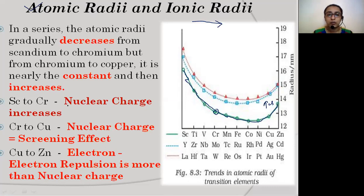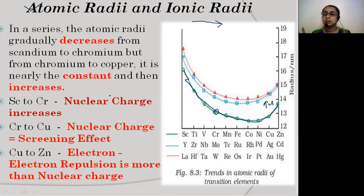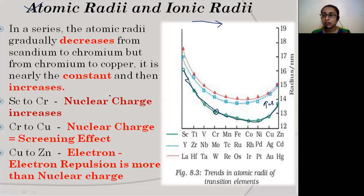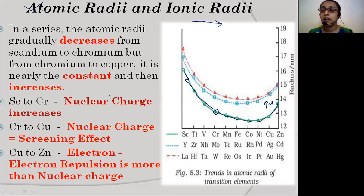Why does this happen? As you move from scandium to chromium, atomic number increases, meaning one electron is added at each stage to the (n-1)d orbital while nuclear charge is also increasing. As nuclear charge increases, atomic radii decreases. Each added d-electron provides a screening effect to the valence (ns) electrons, shielding them from nuclear attraction.